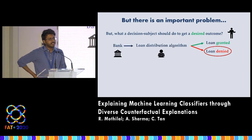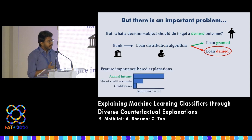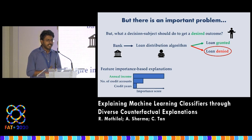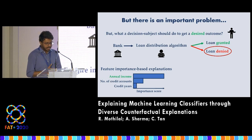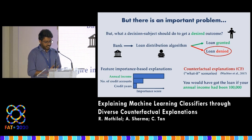To explain the situation, consider a scenario where a person applies for a loan and gets rejected by the loan distribution algorithm of a financial company. In such a case, a feature importance based method would highlight the most important feature — say, the annual income — that contributed to the prediction. However, it does not say what the person could have done with the annual income to get the loan. That's why a different class of explanations called counterfactual explanations exist, providing these what-if scenarios that tell the person what they could have done with the feature to get the outcome they want.